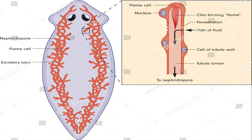Now, how does the protonephridia help in excretion? First, remember that this is a single tube, not many tubes. It has small branches, and these branches have a small setup of cells on their tips. These small setups of cells are called flame cells.